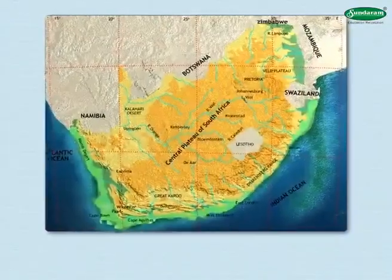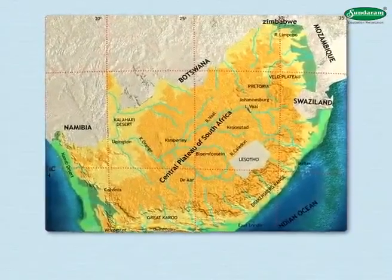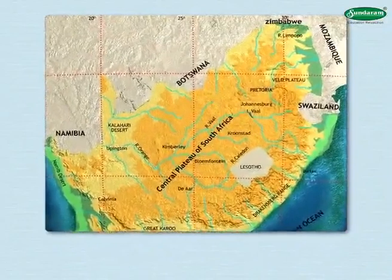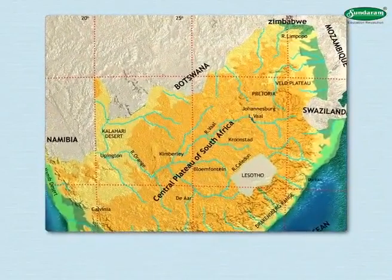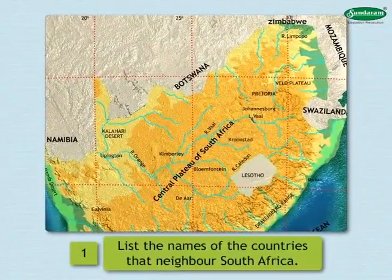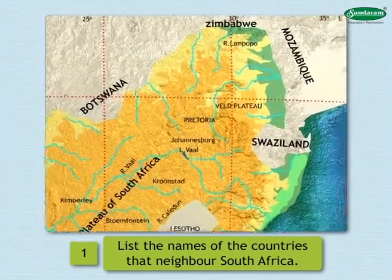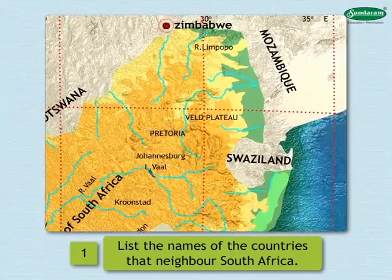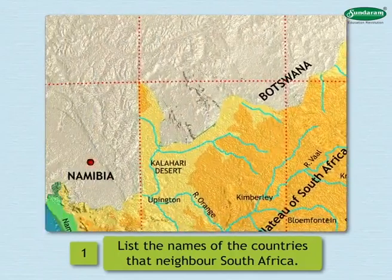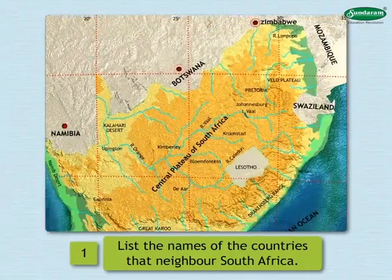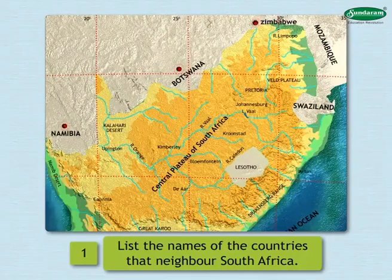See the color figure for the location, extent and boundaries of the country and answer the following. 1. List the names of the countries that neighbor South Africa. Zimbabwe, Namibia, and Botswana are South Africa's neighboring countries to its north, and Mozambique lies to the northeast.